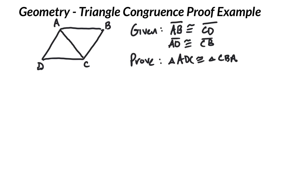We're being told that AB—so right here—is congruent to CD, so I like to mark that in. So these two sides have the same length. And then that AD is congruent to CB, so that these two sides have the same length.